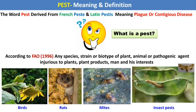Before we study the categories of different pests, we should know what is meant by pest. The word pest is a French word or a Latin word. In French it is called 'pasty' and in Latin also 'pasty', meaning plague or contagious disease. According to the FAO in 1996, any species, strain or biotype of plant, animal or pathogenic agent that injures plants, plant products, man and his interests is called a pest — anything that can cause yield losses in a field.